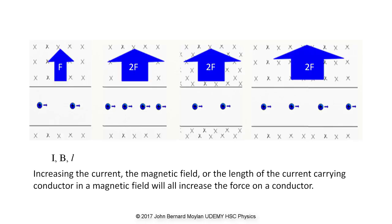The first diagram depicts the situation in which the current is I, the magnetic field strength is B, and the length of the conductor subject to the magnetic field is L, generating a force F on the conductor. If we double the current, as shown in the second diagram, to 2I, but leave the magnetic field strength unchanged at B and the length of the conductor at L, the force on the conductor will be 2F — twice the initial force. The third diagram shows the situation in which the current and the length of the conductor are both the same as in the first diagram, but the magnetic field strength has been doubled. Once again the force on the conductor is doubled.